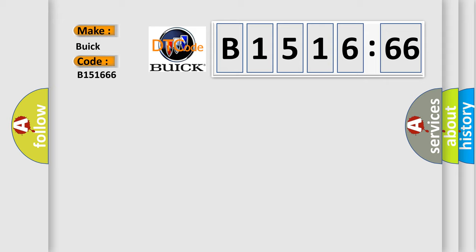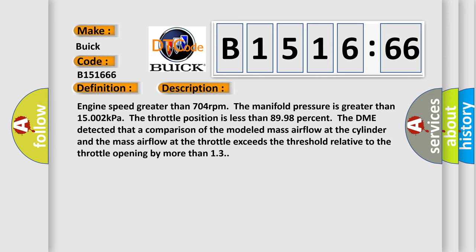So, what does the diagnostic trouble code B151666 interpret specifically for Buick car manufacturers? The basic definition is air intake system leak block 3. And now this is a short description of this DTC code.